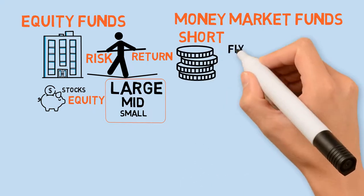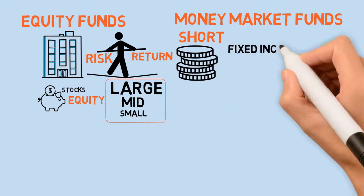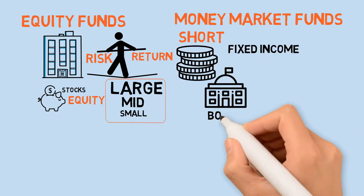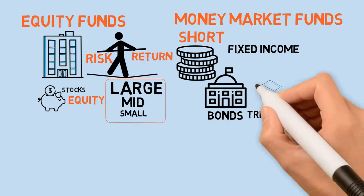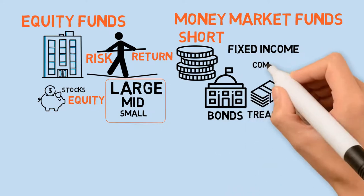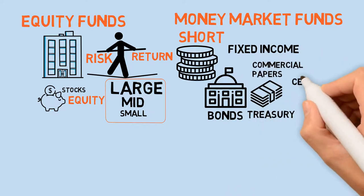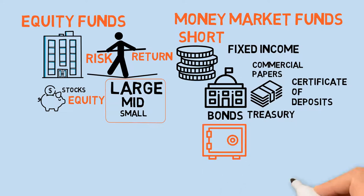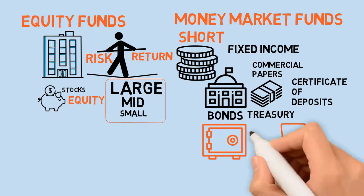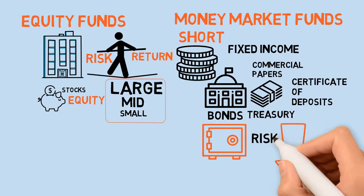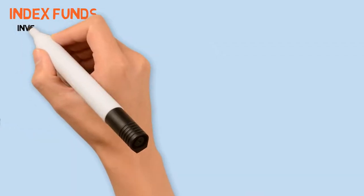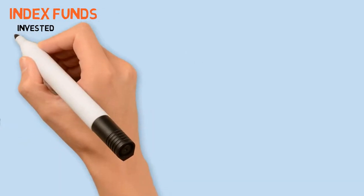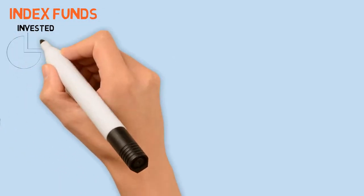Money market funds — these funds invest in short-term fixed income securities such as government bonds, Treasury bills, commercial papers, and certificates of deposit. It's a safer investment with low risk and potentially lower return.